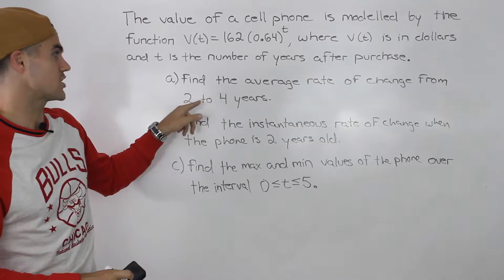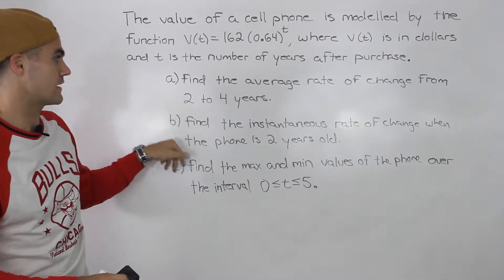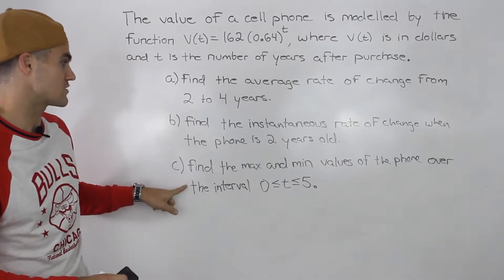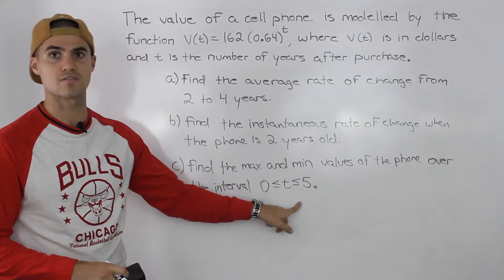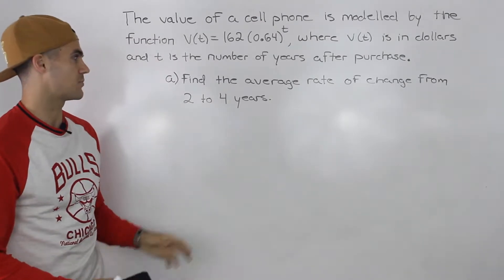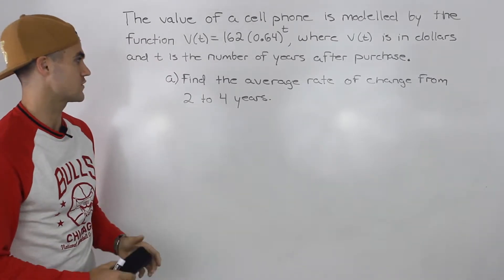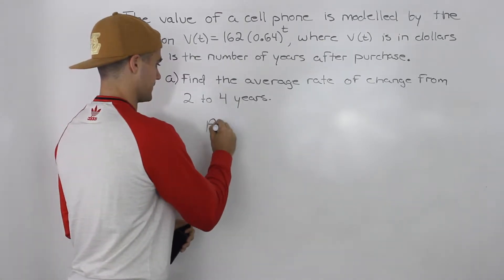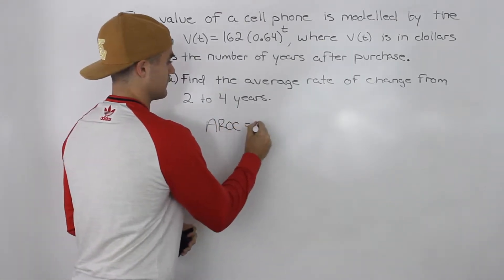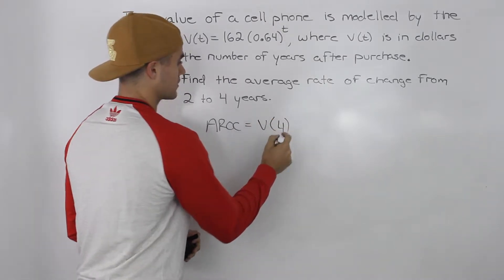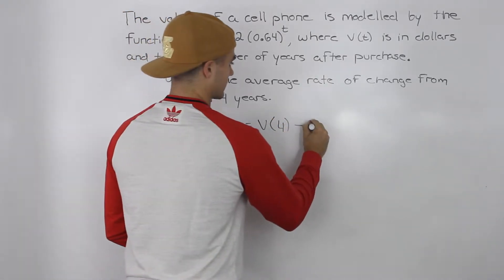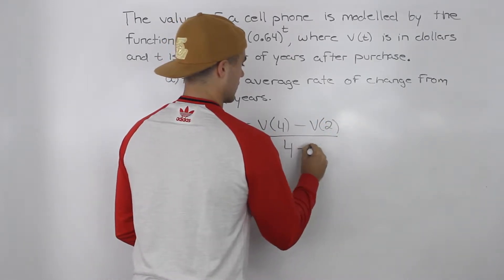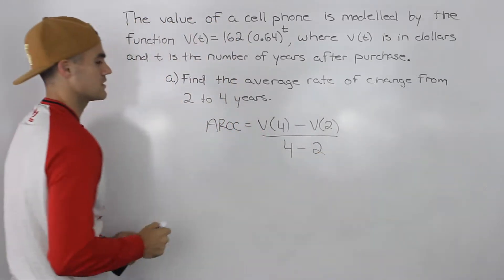Part A, we have to find the average rate of change from two to four years. Part B, find the instantaneous rate of change when the phone is two years old. Part C, find the max and min values of the phone over the interval zero to five years. So let's move on to Part A — we have to find the average rate of change from years two to four. We find the value of the phone at the four-year mark, subtract the value at the two-year mark, and divide by four minus two in the denominator.